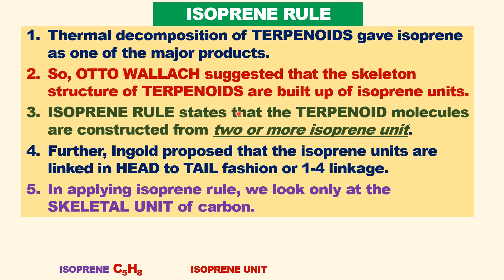Terpenoids are made up of two or more isoprene units — this is the Isoprene Rule. It states that terpenoid molecules are constructed from two or more isoprene units. Wallach further proposed that the isoprene units are linked together in head-to-tail fashion, also called 1-4 linkage.